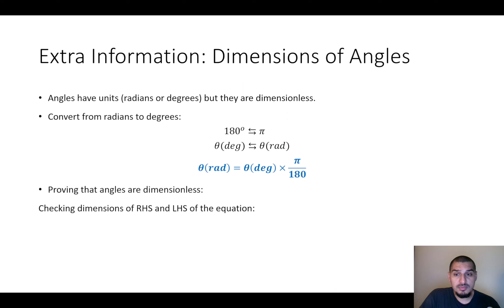We can find this by finding an equation, a valid equation that we know is a correct equation. And we can check the dimensions of the right and left-hand side. And from this, we can know if the degrees have dimensions or not.